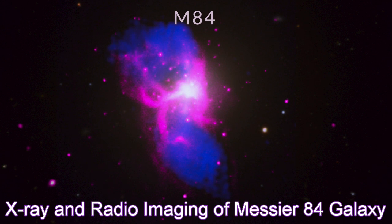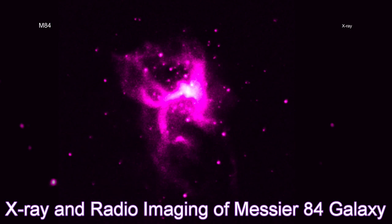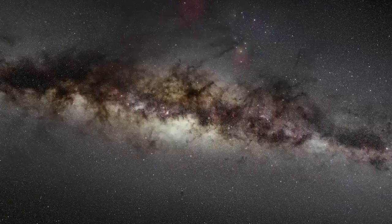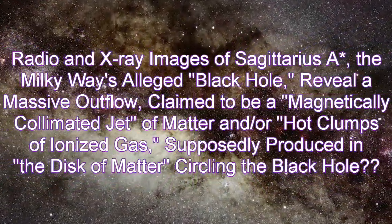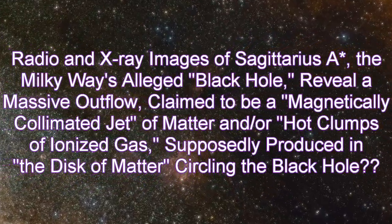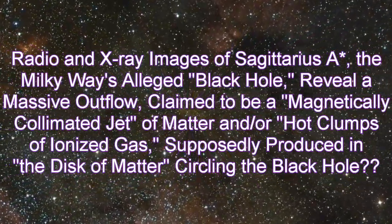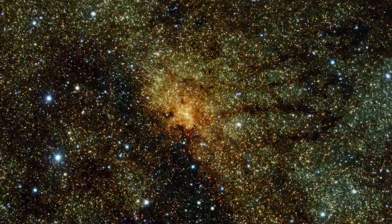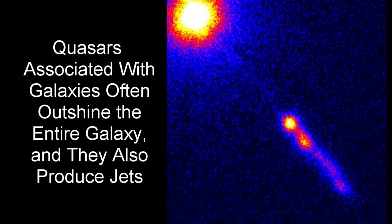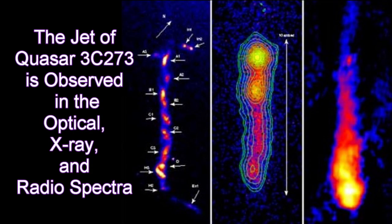X-ray and radio imaging of Messier 84 galaxy and radio and X-ray images of Sagittarius A*, the Milky Way's alleged black hole, reveal a massive outflow claimed to be a magnetically collimated jet of matter and hot clumps of ionized gas supposedly produced in the disk of matter circling the black hole. Quasars associated with galaxies often outshine the entire galaxy and also produce jets. The jet of Quasar 3C273 is observed in the optical, X-ray, and radio spectra.